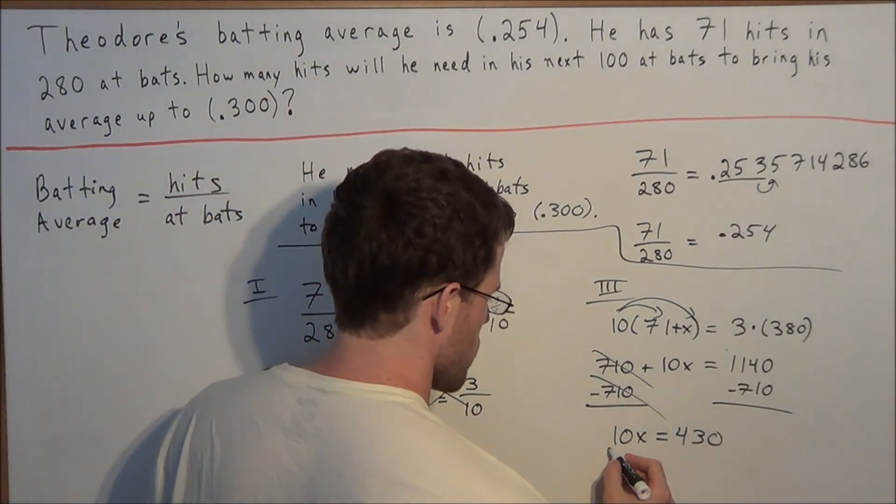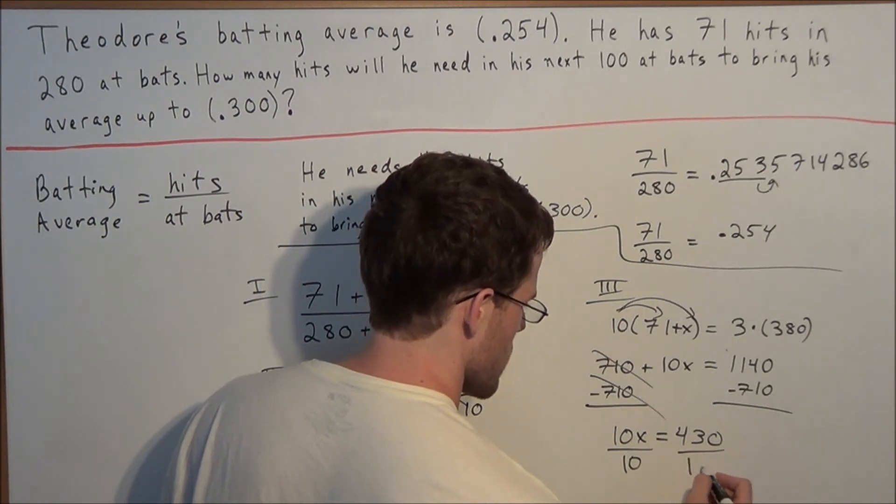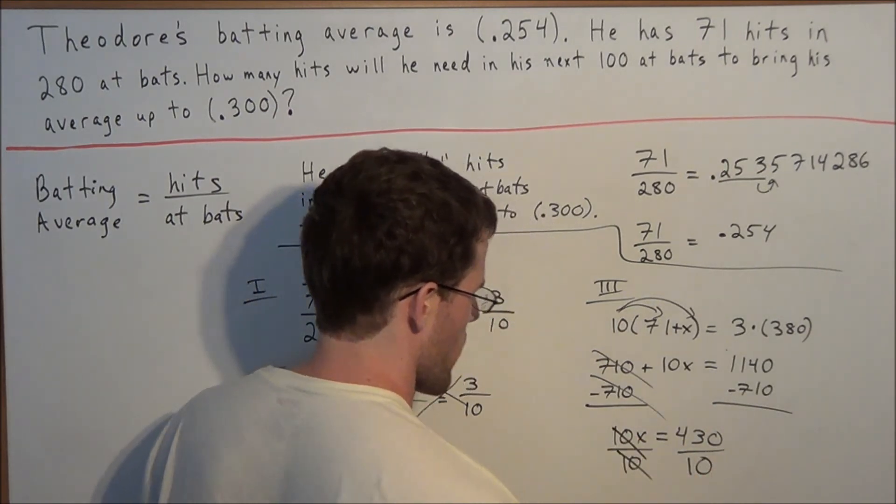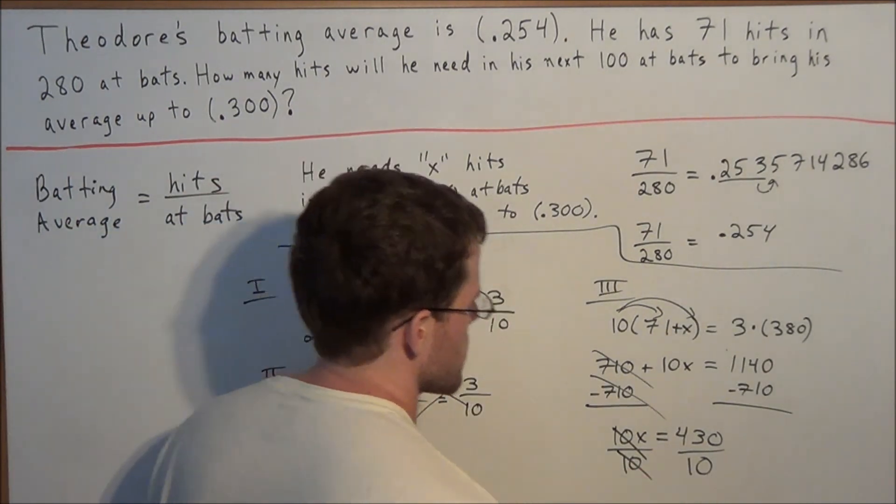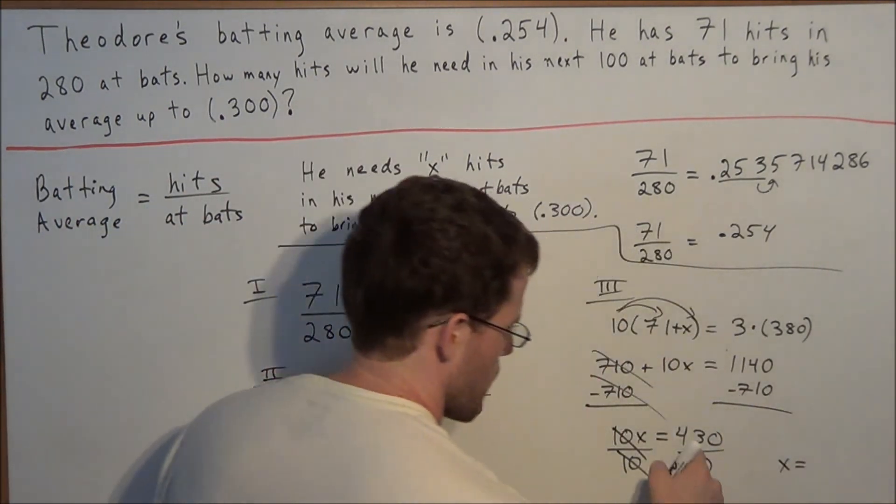And now to solve for x, all we need to do is divide both sides by 10. So we get our answer, x equals 430 divided by 10, or this gives us x equals 43.